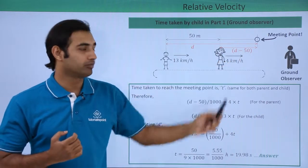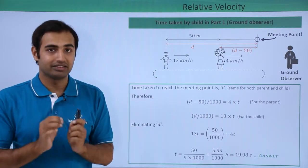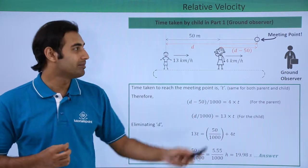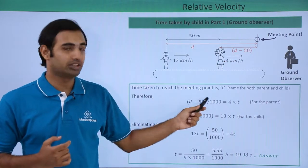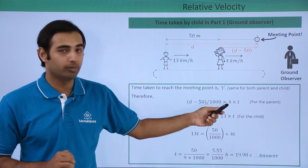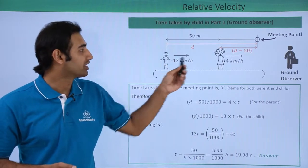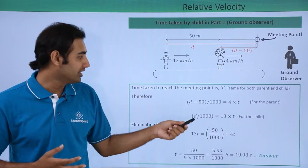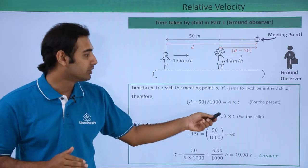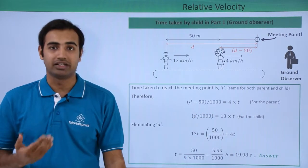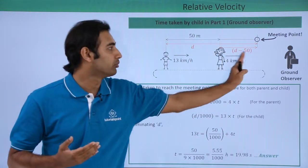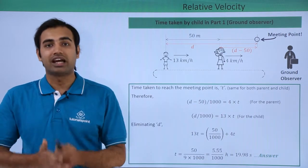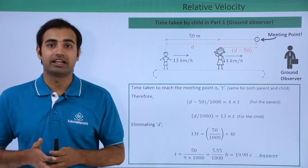Assuming the child covers distance d meters, the mother covers (d − 50) meters. Writing equations: for the mother, (d − 50)/1000 = 4t, and for the child, d/1000 = 13t, where the division by 1000 converts meters to kilometers. Solving these two equations simultaneously gives t = 19.98 seconds. So the time taken by the child when running in the direction of the belt is 19.98 seconds.